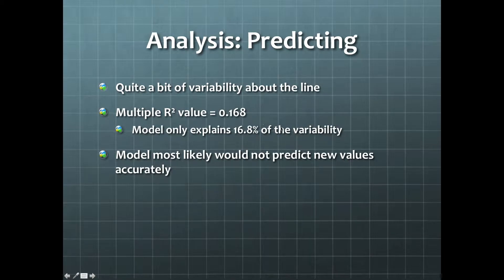which means the model only explains 16.8% of the variability. Therefore, the model most likely would not predict new actual spreads accurately.